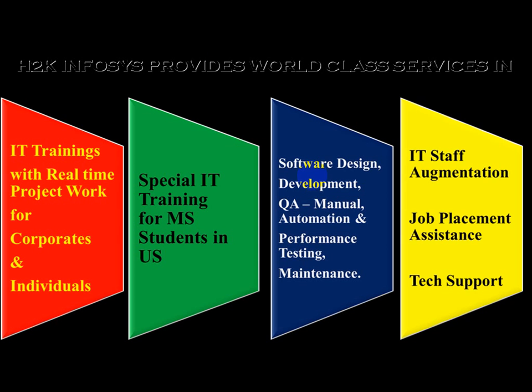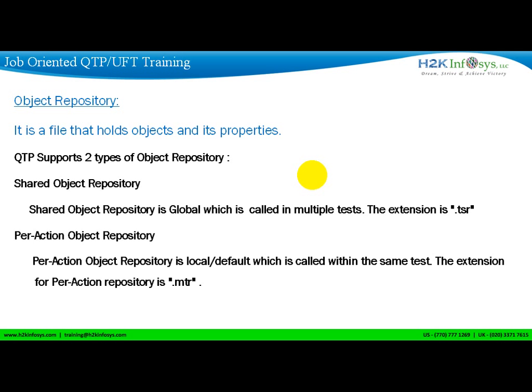An object repository is a memory file that is going to hold the objects and their properties. Whatever objects are there in your application, it captures all those objects and their related properties and stores them in the memory file. Whenever you run the script, it retrieves that object information from the memory file in order to recognize that object uniquely in the application.